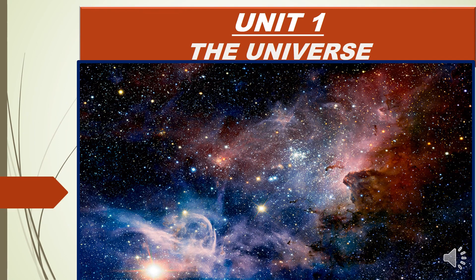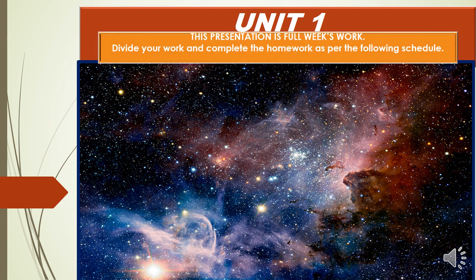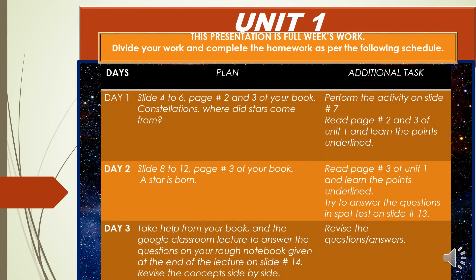Let's start with Unit One of World Watch One — its name is 'The Universe.' This whole presentation is your full week's work. In school we have three lessons of geography, so I've divided this presentation into three parts. On Day One, go through slides four, five, and six, covering pages two and three of your book. The topics are constellations and where did stars come from. Your homework will be to perform the activity mentioned in slide seven, and learn the important points.